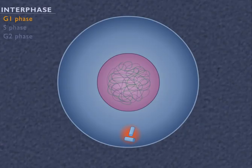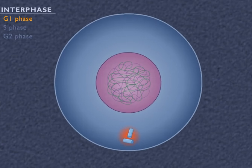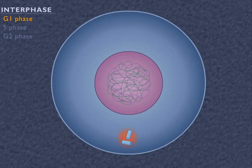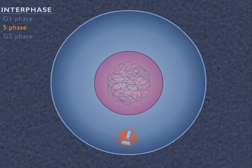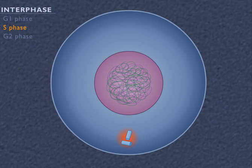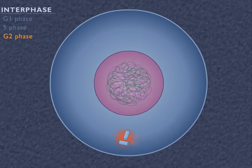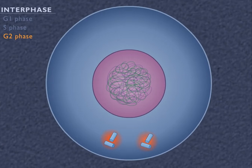During the G1 or first growth phase, normal cell functions occur as well as cell growth. In the S phase, DNA replicates, producing two copies of each chromosome. During the G2 phase, the cell continues to prepare for mitosis and cell division.